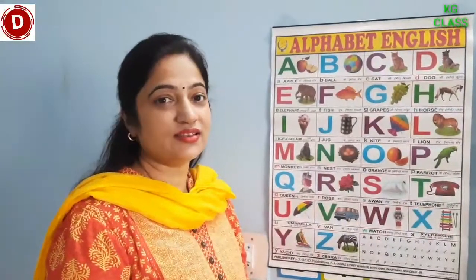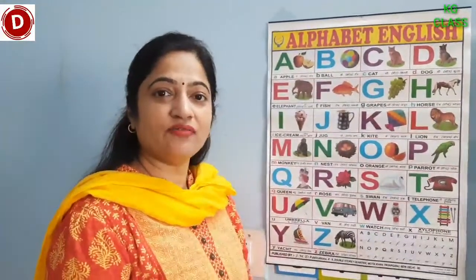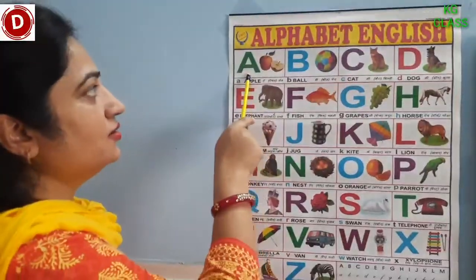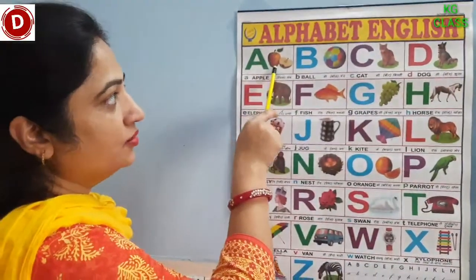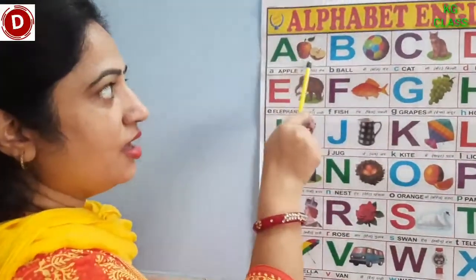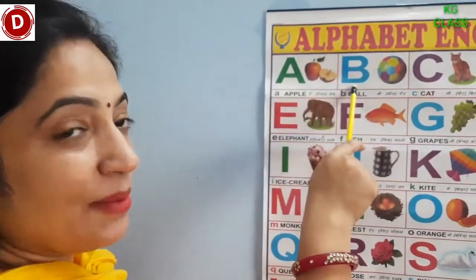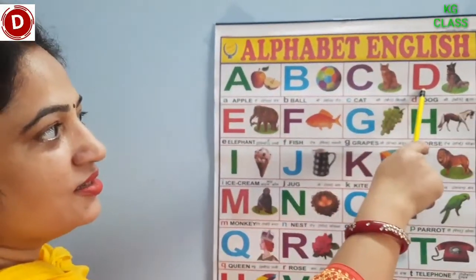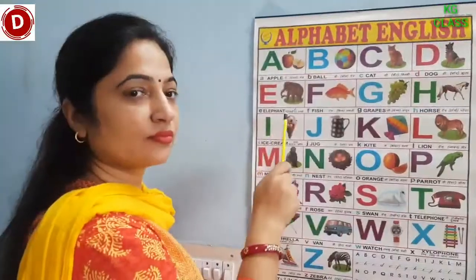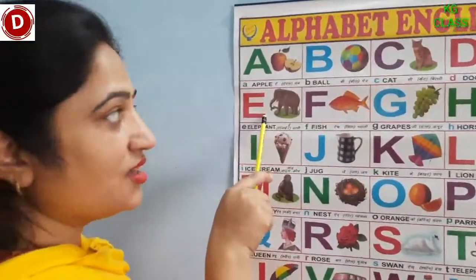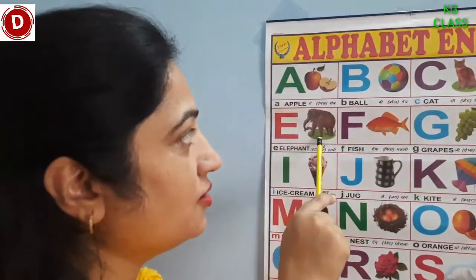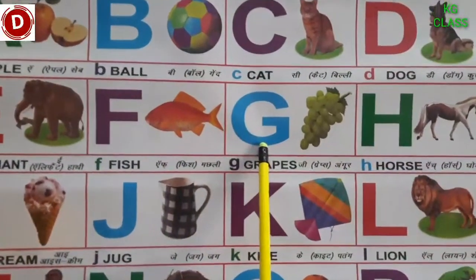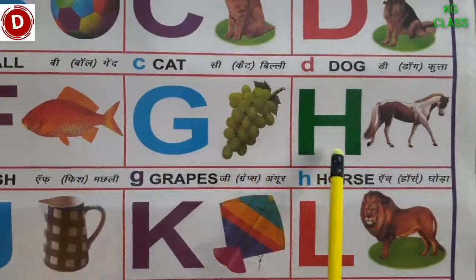Now let's learn and read capital alphabet A to Z with the help of this chart. Now look here. This is A, A for apple. You also speak with me. A, A for apple. B, this is capital B, B for ball. C, C for cat. This is D, D for dog. Now comes E, and this is capital E, E for elephant. You can see here. This is F, F for fish. This is G, speak with me, G for grapes. This is H, H for horse.